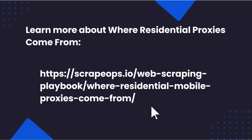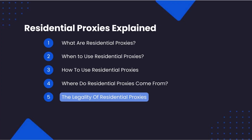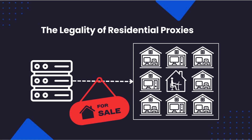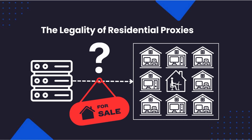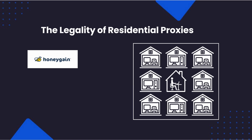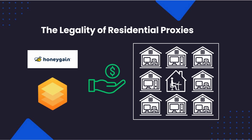When proxy providers first started offering residential proxies, there were legitimate questions over how they acquired access to these residential IP addresses and whether they had permission from the owners to use them. Thankfully, in the last few years things have significantly moved out of the shadows, and the proxy provider industry has become much more transparent. Sites like Honeygain and PacketStream pay users to let them use their IP addresses as a residential proxy, and then sell access to this proxy network to web scrapers and other proxy providers.